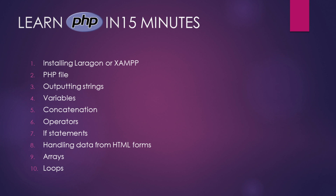Once we have installed our local host and other required software, we will learn how to create a PHP file. There are several data types in PHP. The first one we will cover is a data type called a string. Variables are used to store or hold data such as a string. We will examine what concatenation is. We will also cover operators, if statements, forms, arrays, and loops.